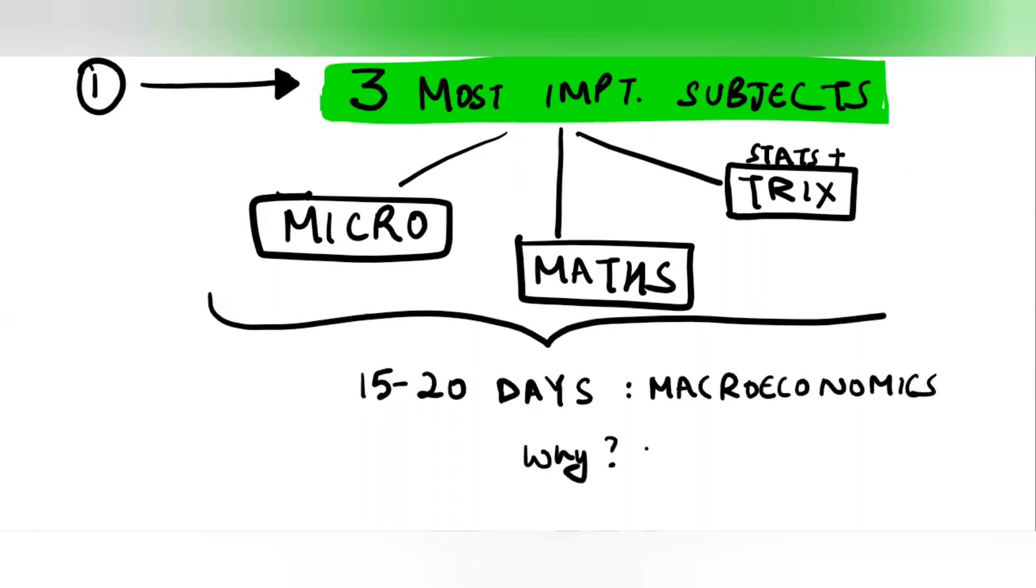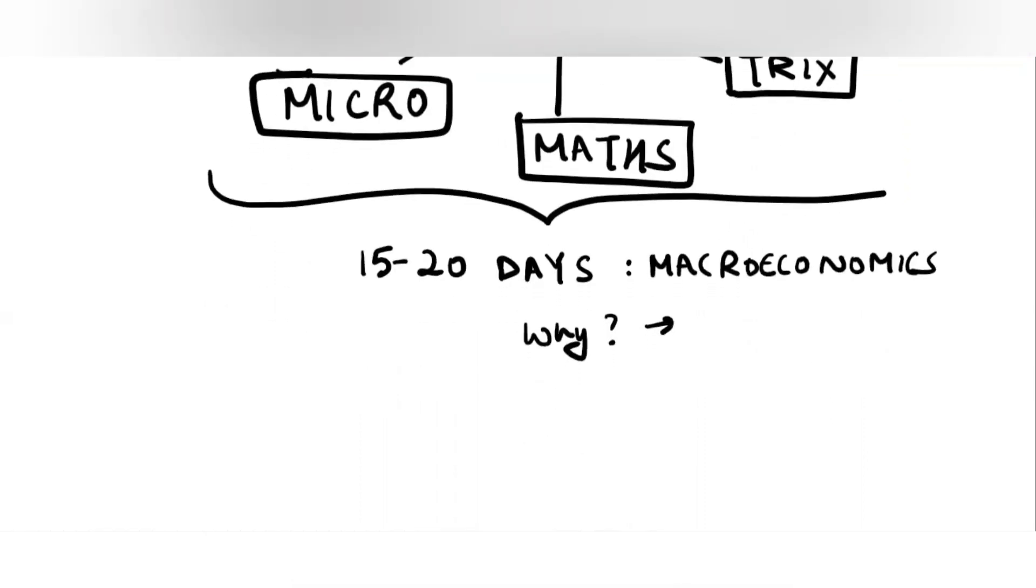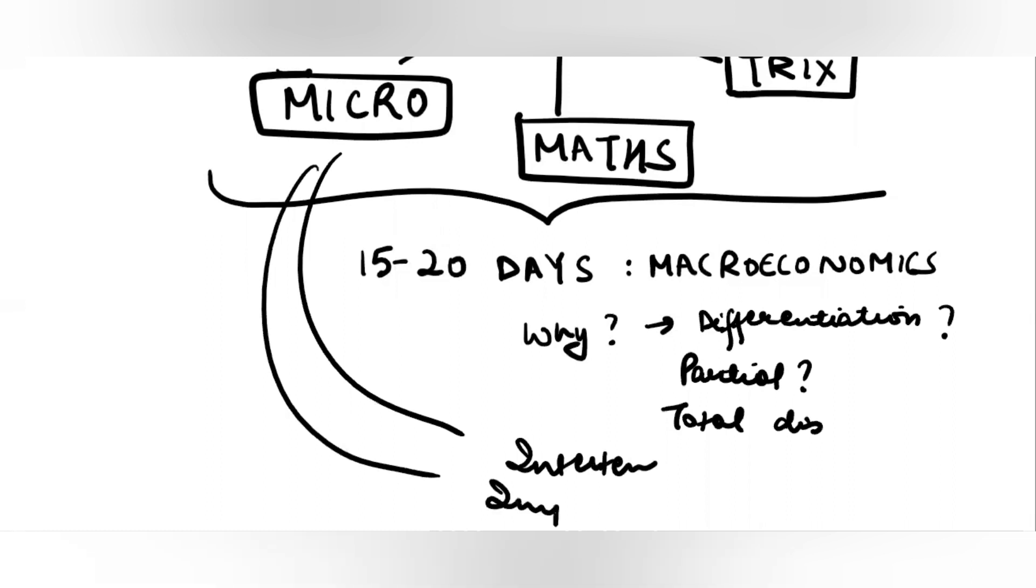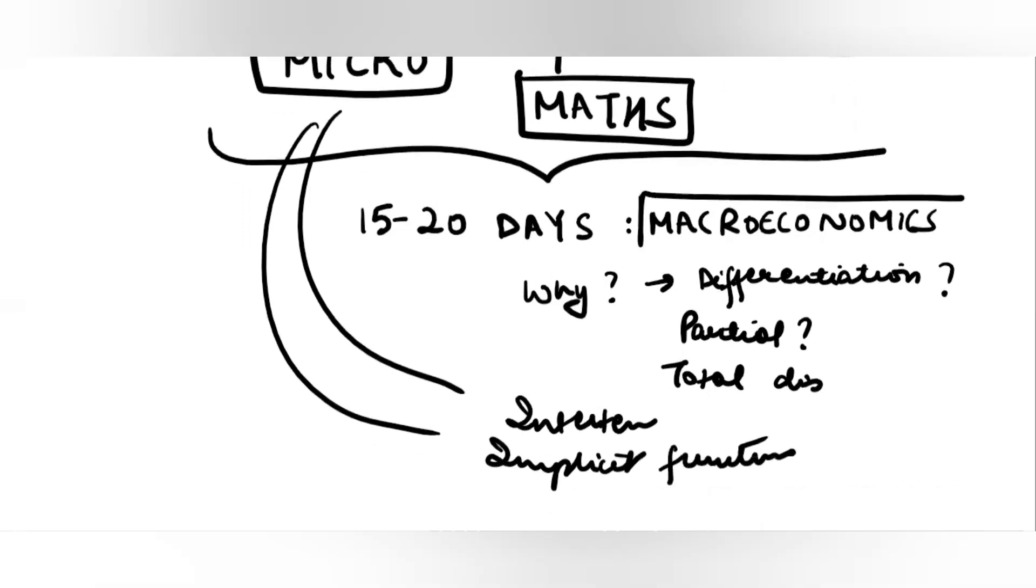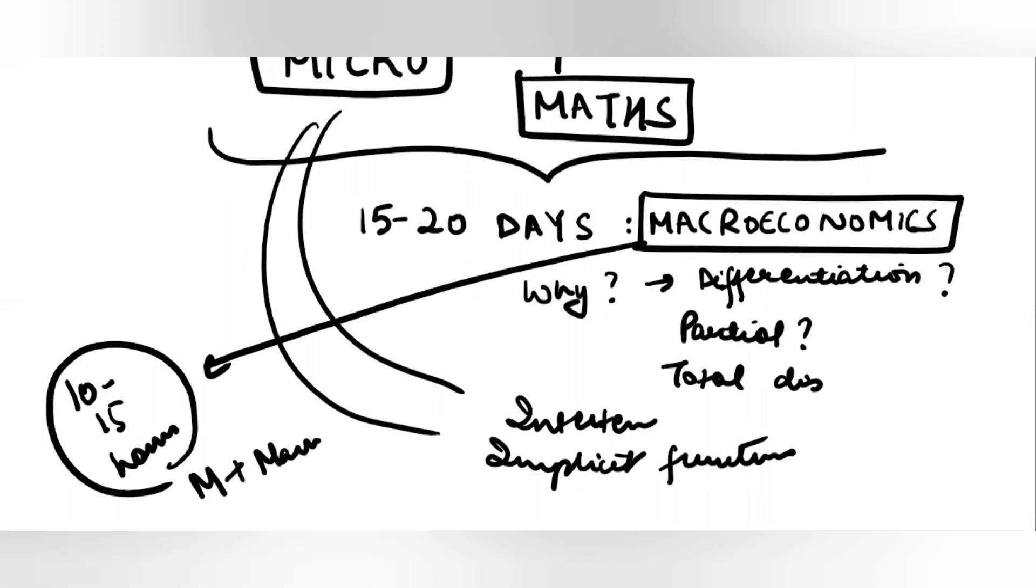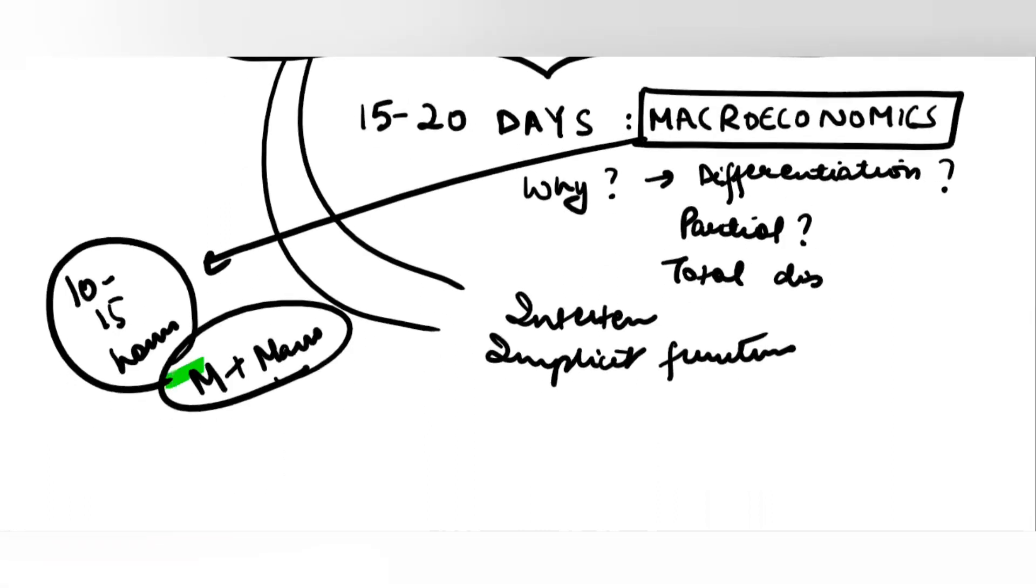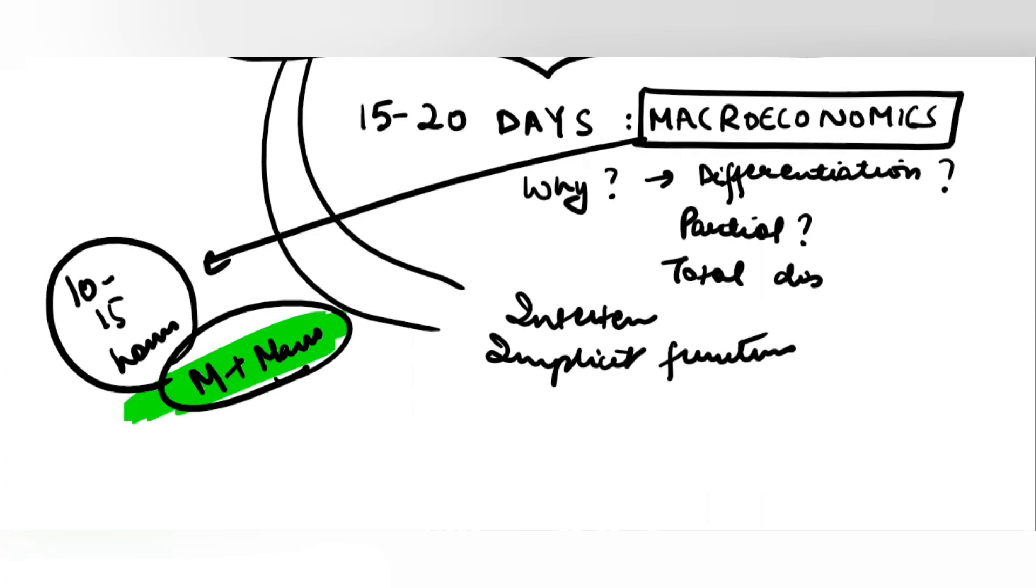Because by then you would know how to do differentiation, partial differentiation, total differentiation, what is intertemporal, how to define implicit functions. The entire macroeconomics, believe me, whatever comes in exam is just 10 to 15 hours of rigorous math plus macroeconomics. But you will be able to do this part only if you are thorough with this.